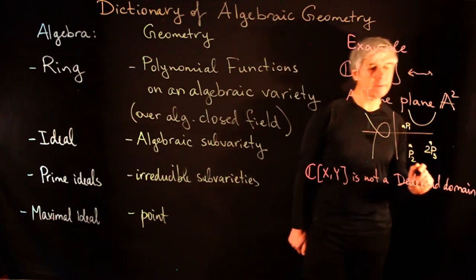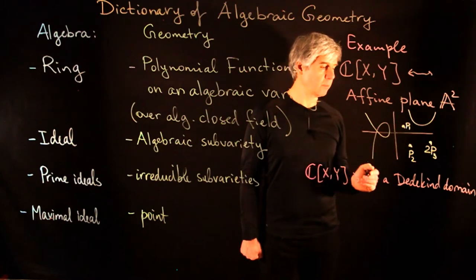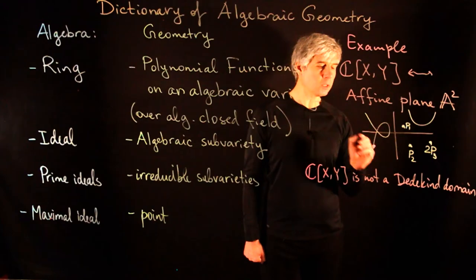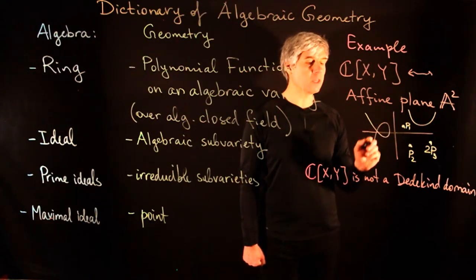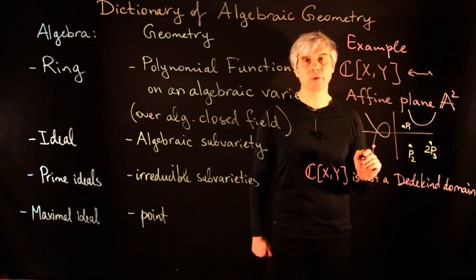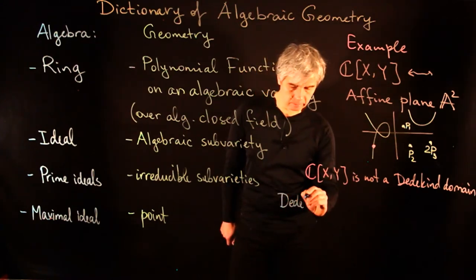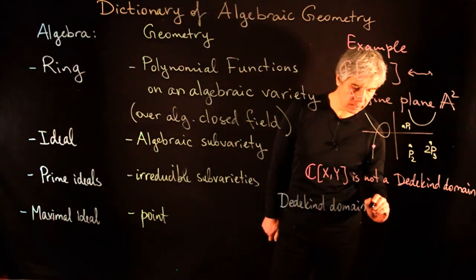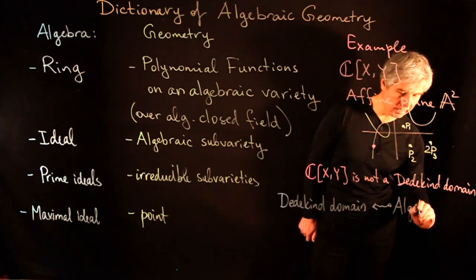C[x,y] is not a Dedekind domain because we have prime ideals corresponding to irreducible curves on the affine plane, but these prime ideals are not maximal. If we select a point on such a curve, the ideal of functions vanishing at that point is strictly greater than the ideal of functions vanishing on the curve.